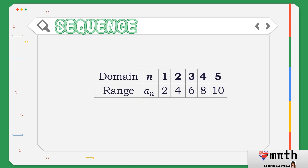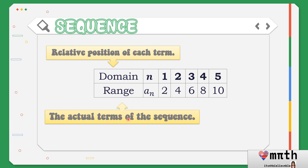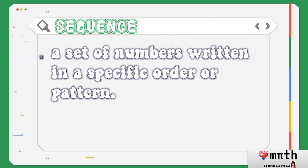Based on this illustration, the domain is equal to n, while the range is equal to the value of a sub n. The domain is the relative position of each term — meaning if n equals 1, it indicates the first term of the sequence; if n equals 2, it indicates the second term, and so on. The range represents the actual terms of the sequence. To simplify, a sequence is a set of numbers written in a specific order or pattern. If a set of numbers has a pattern, we can consider it a sequence.